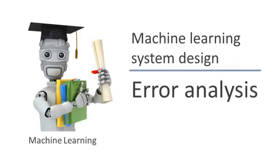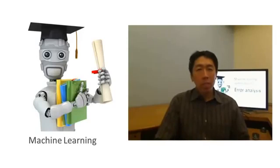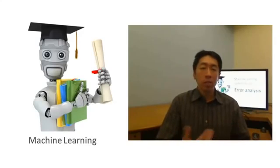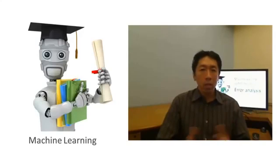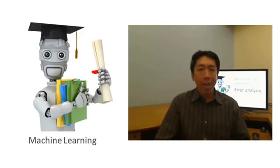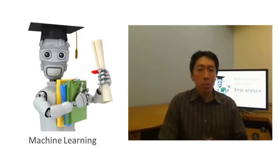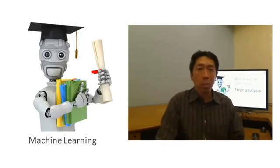In the last video, I talked about how when faced with a machine learning problem, there are often lots of different ideas for how to improve the algorithm. In this video, let's talk about the concept of error analysis, which will hopefully give you a way to more systematically make some of these decisions.